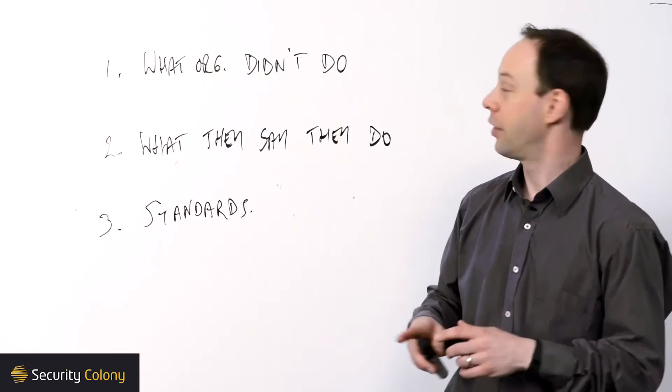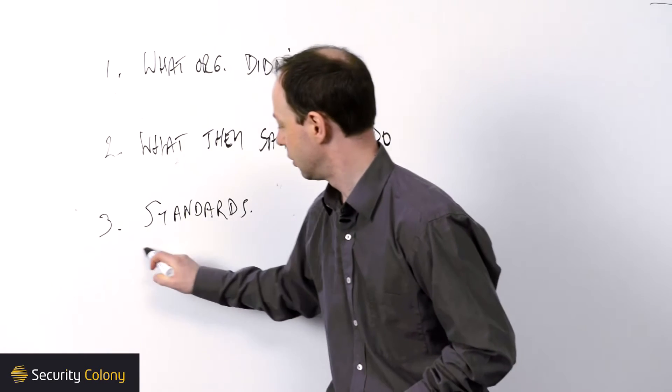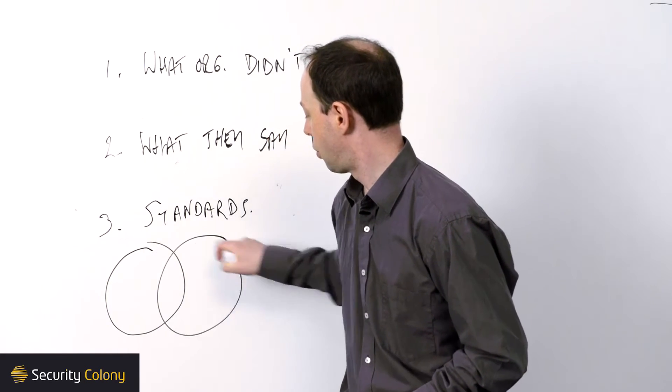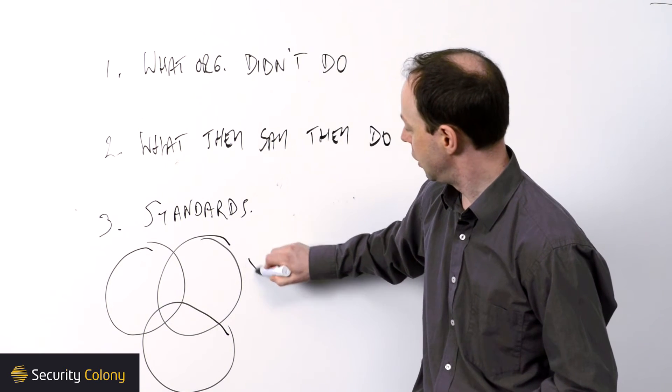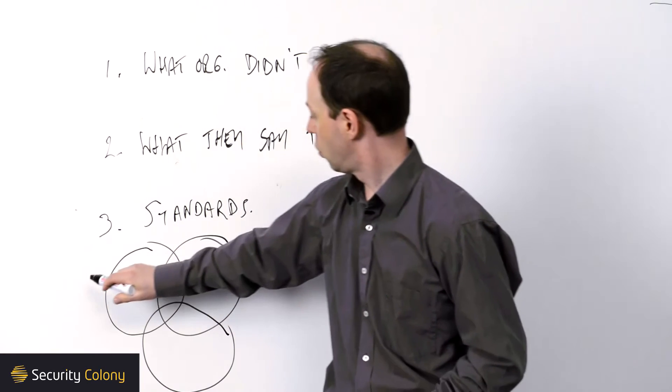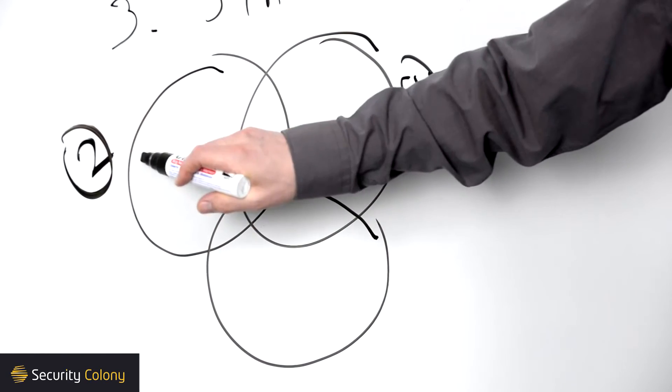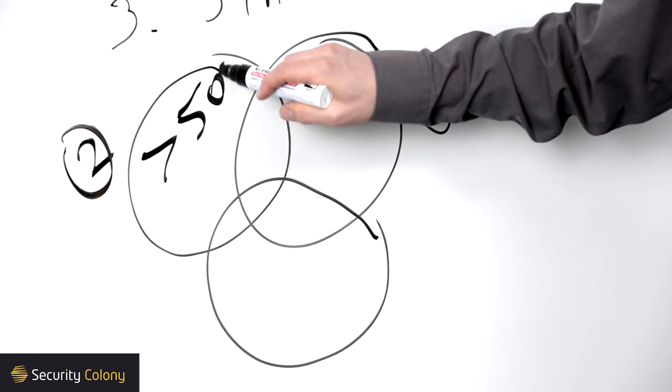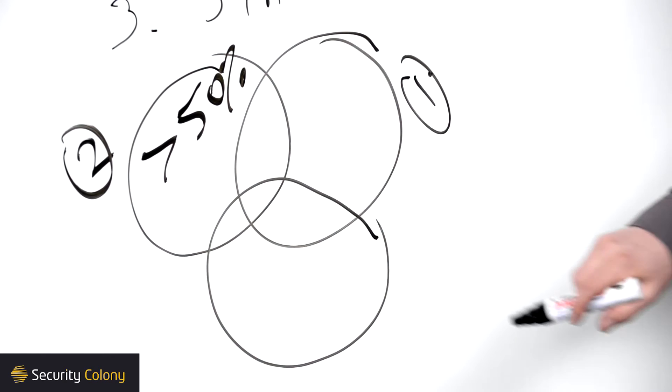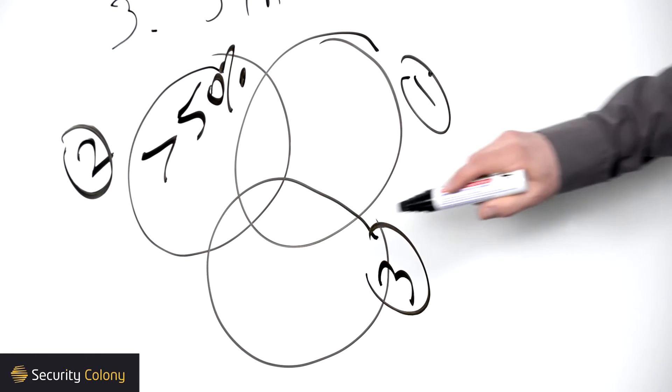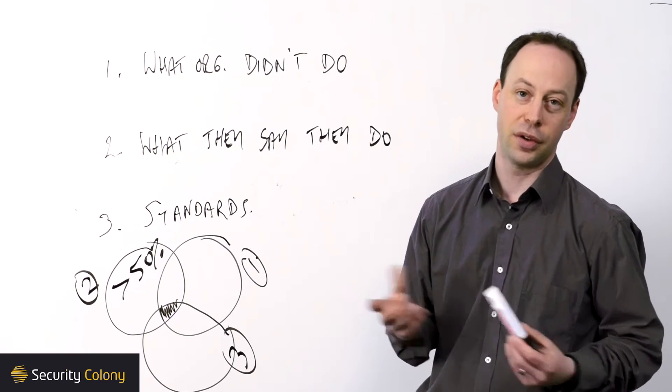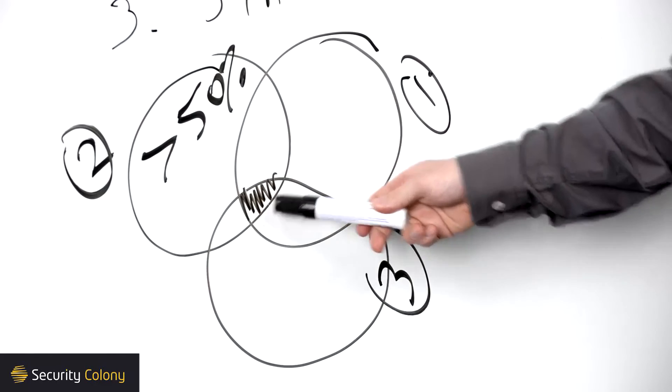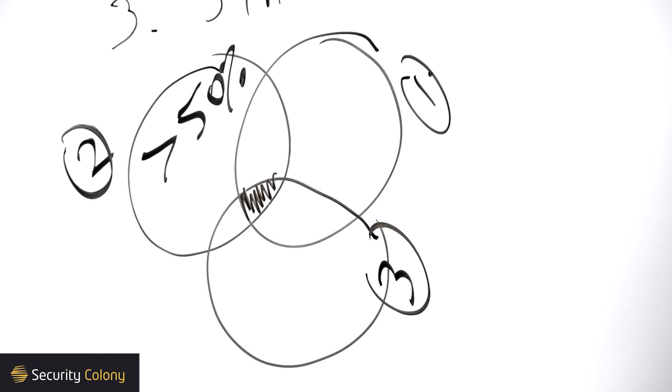Now, when we take all of that together, and we use an approach of saying what the organizations didn't do, what they said they do - and we really only want the controls that have over 50% adoption - and thirdly, the standards, effectively what we're looking for is the crossover between the three of them. That is what we consider to be the minimum viable security.